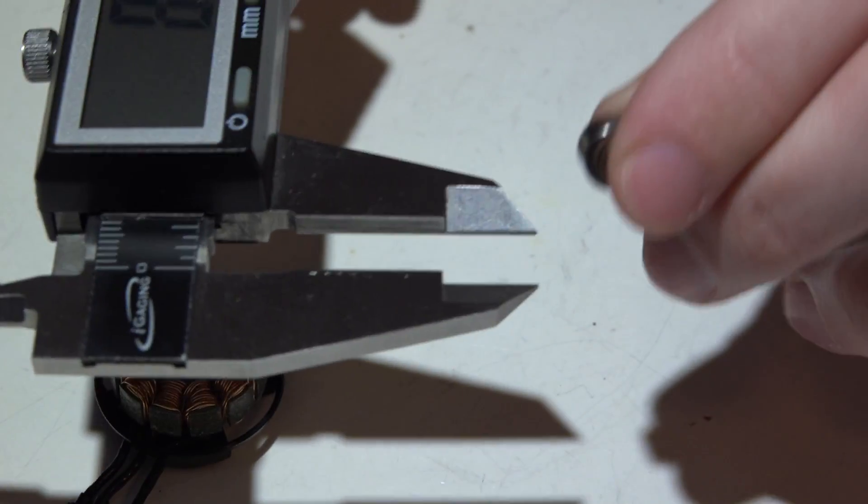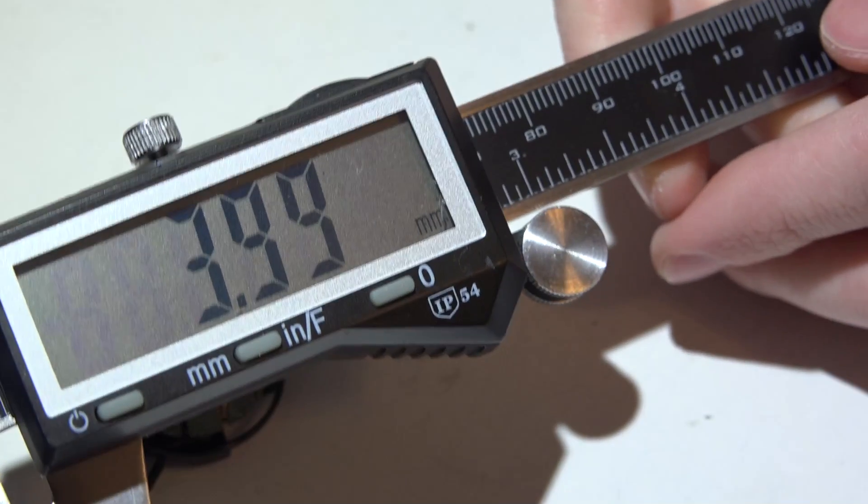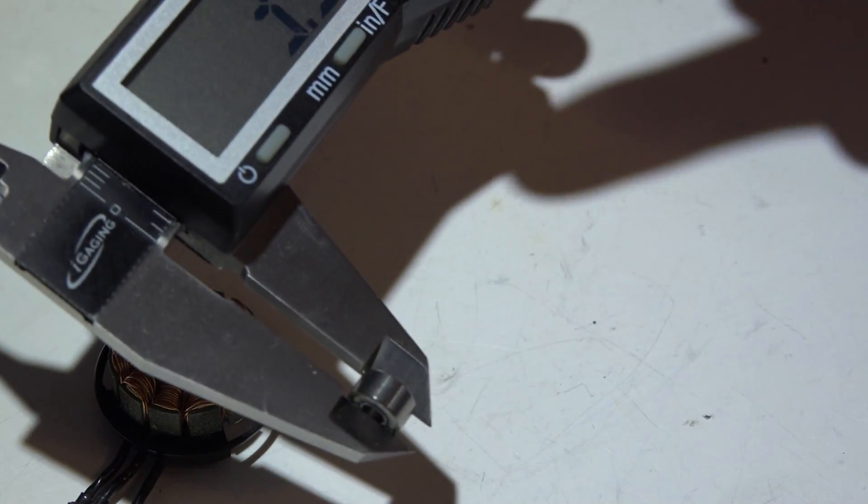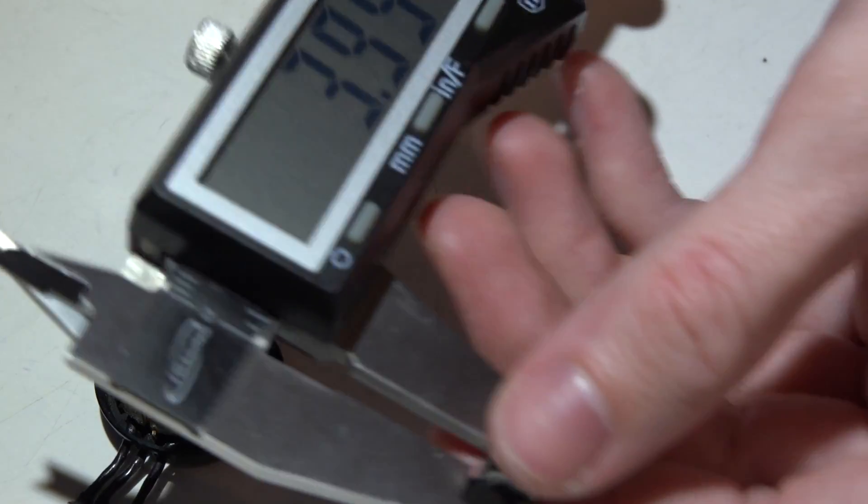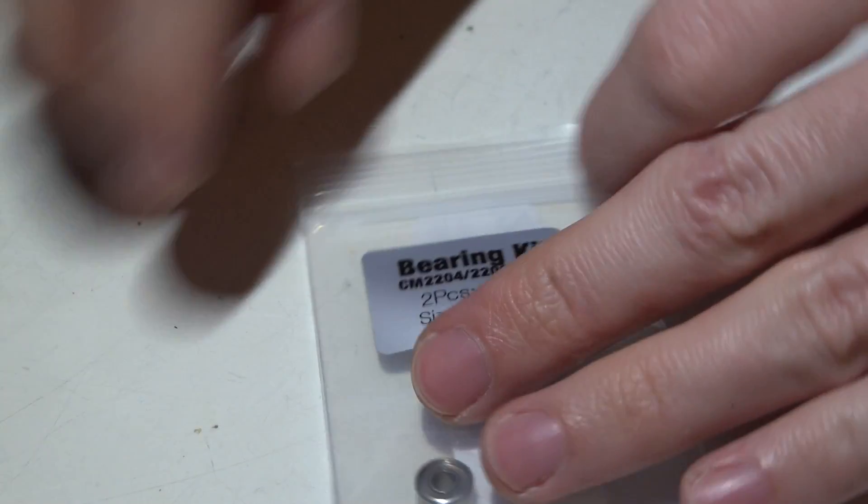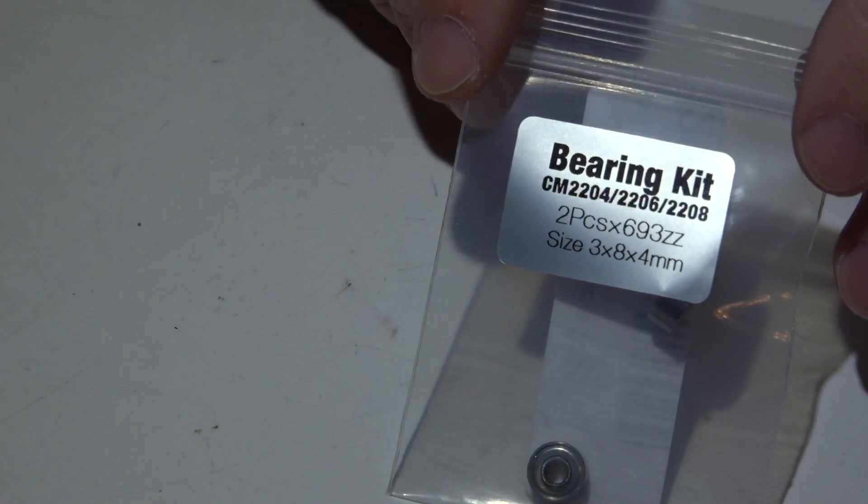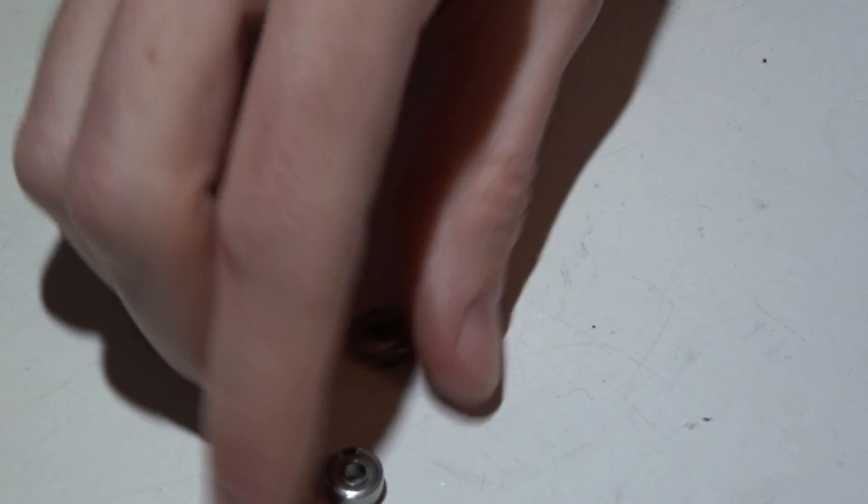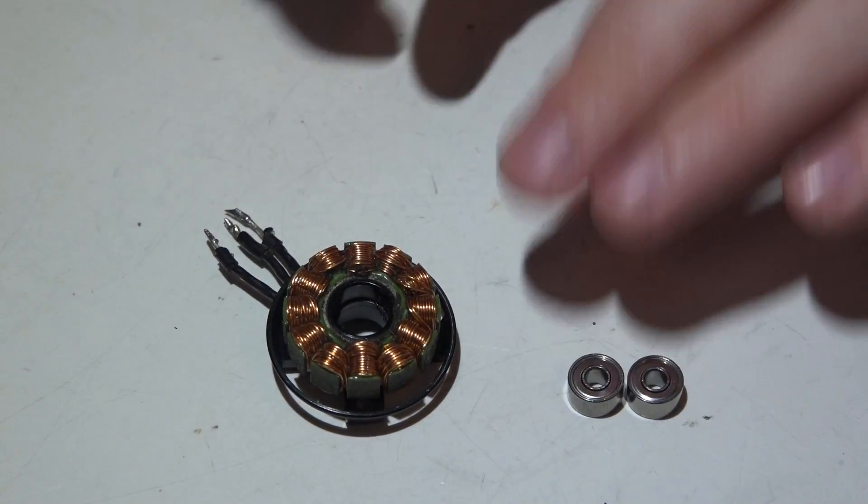For the second measurement, I will measure the outside of the bearing. This time we're getting eight millimeters. Now I want to measure the height of the bearing, and that will be four millimeters. Do not use these measurements - your bearings are probably different. I'm just showing you how to do it. So we got three millimeters, eight millimeters, and four millimeters. Voila! Do a Google search and you will find the bearings that you need. Brand spanking new bearings.